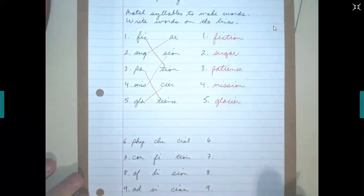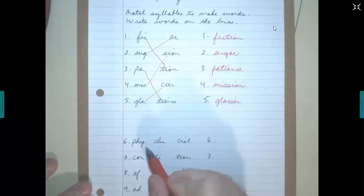Now we have some words, six, seven, eight, and nine, that have three syllables. Let's match these up. The first one is F-I, so we want to match that up with physician.